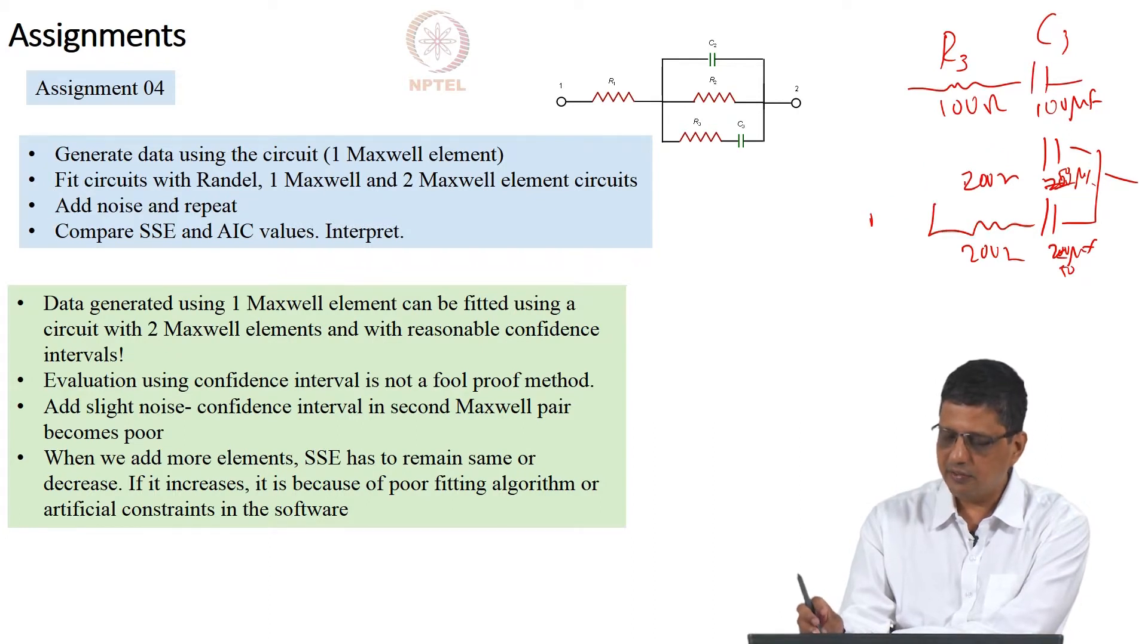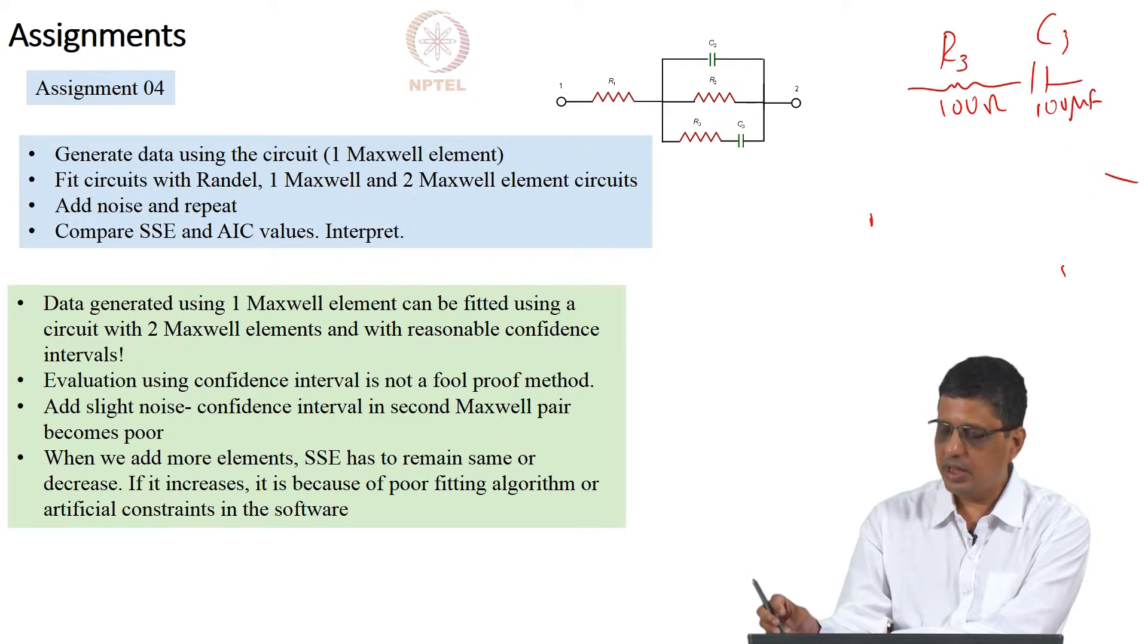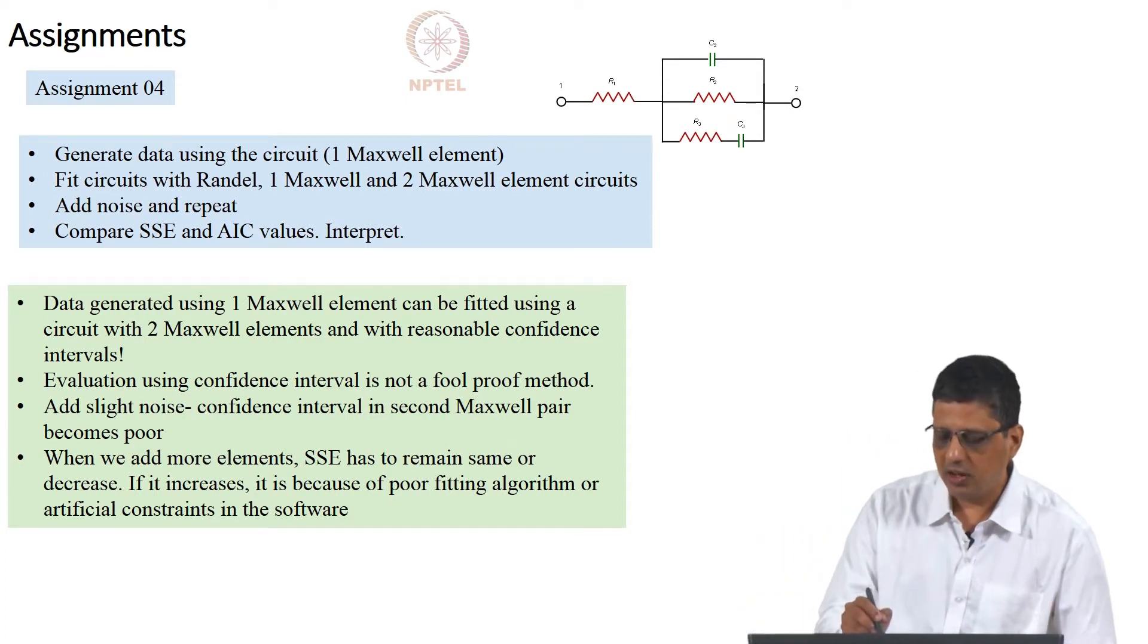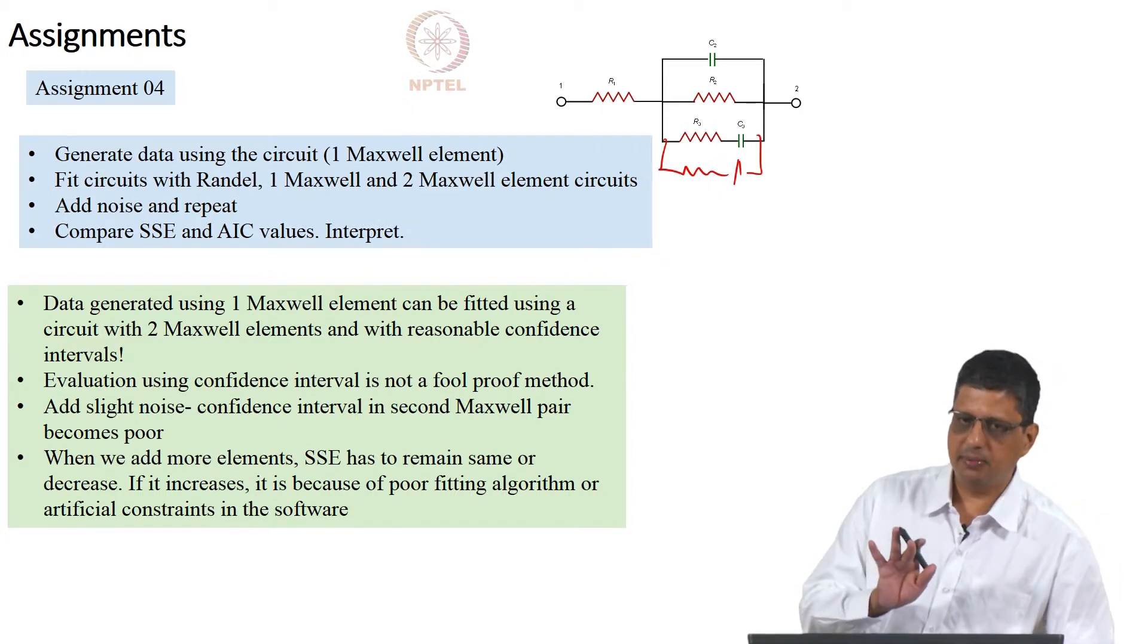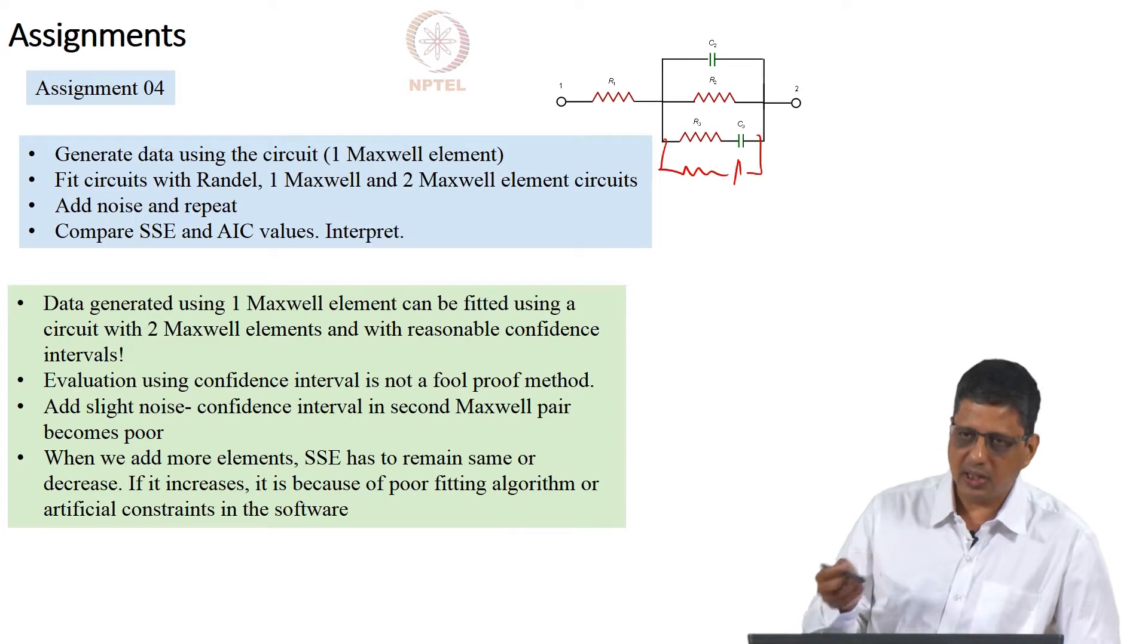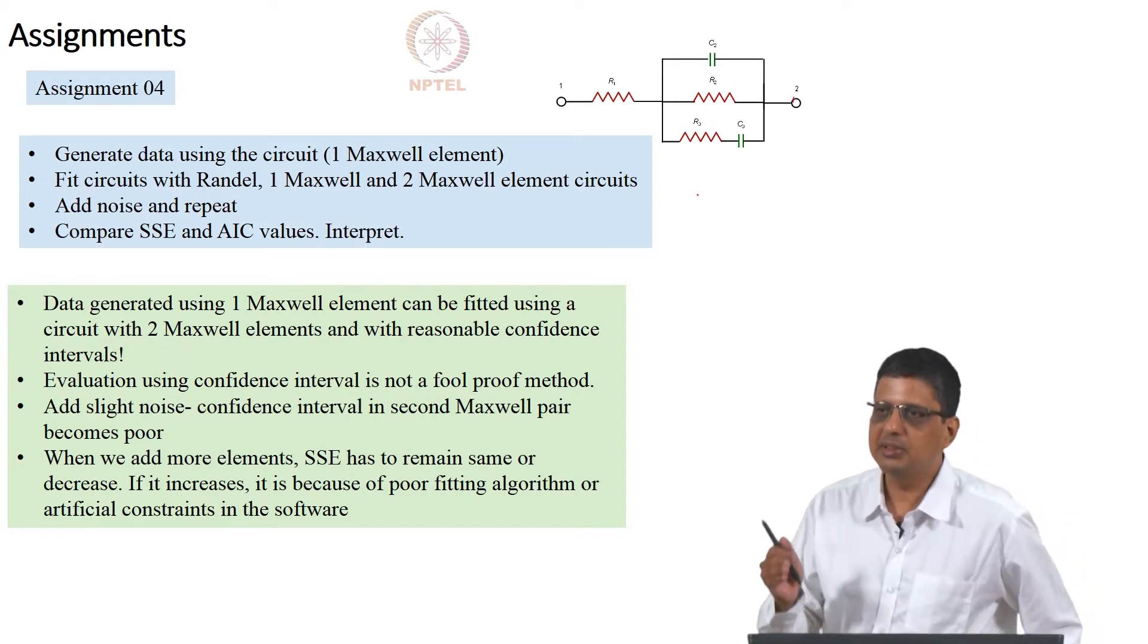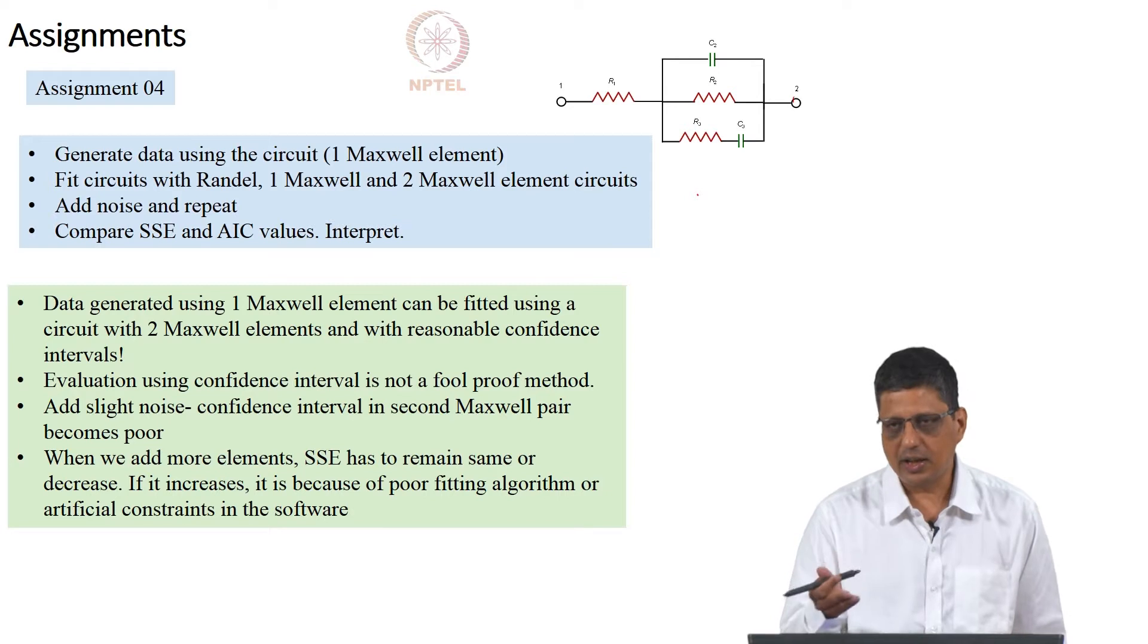Another thing is because of the way the software uses its own constraints, sum square error, when I add more elements, I expect the sum square error to remain the same or it becomes less. I fit this, it models the data, there is some difference between the experimental data, experimental or simulated data, and the model data here. If I add one more element, error has to go down or at the worst case, it has remained the same. But sometimes the software will give you a higher error. Reason is it does not set the r value to be infinity, it cannot set it to 0. If I add r value here, it cannot set it to 0, it will have a nonzero value. That is constraint given by the programmer. It cannot set an infinite value here, it will set a large value here.